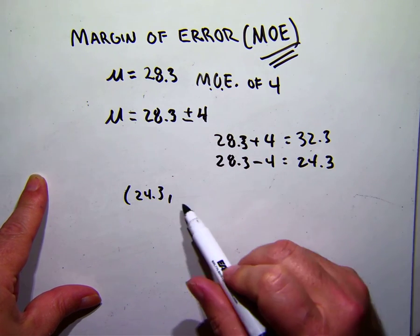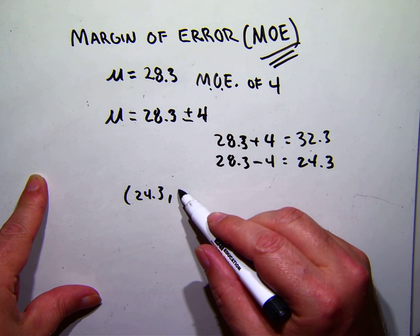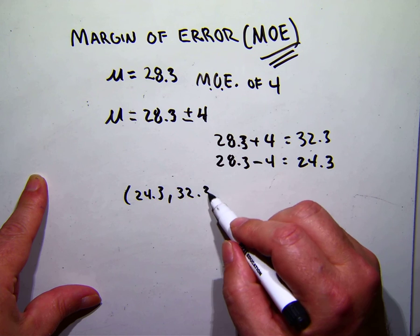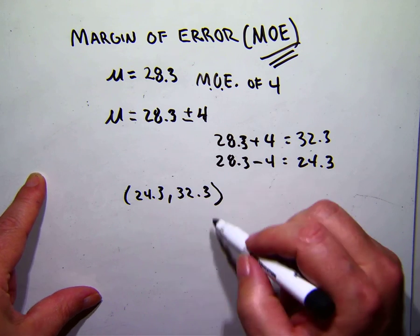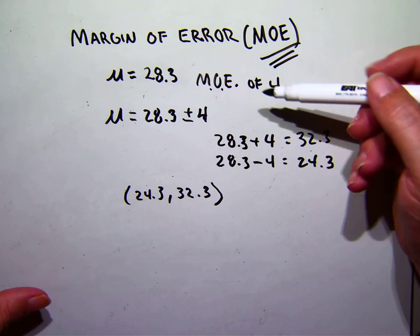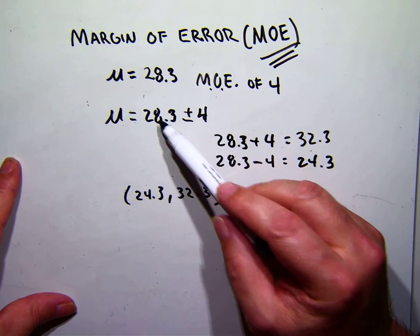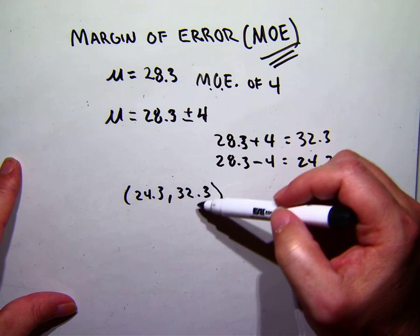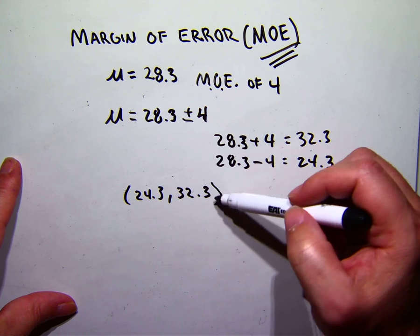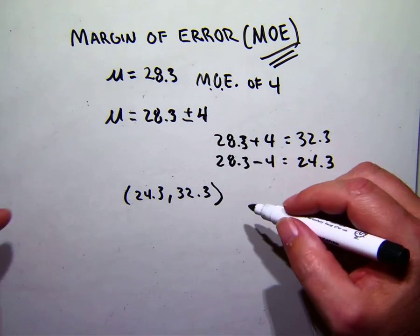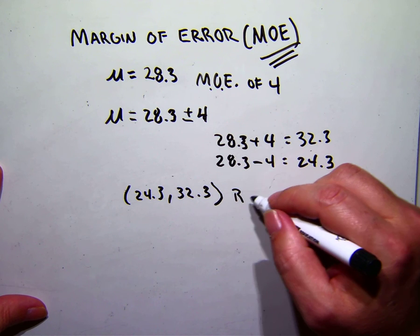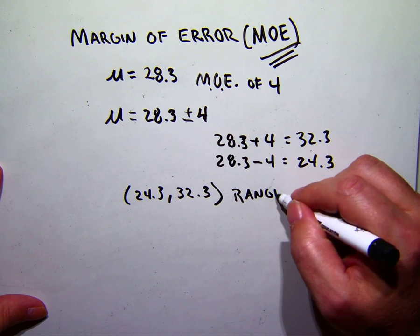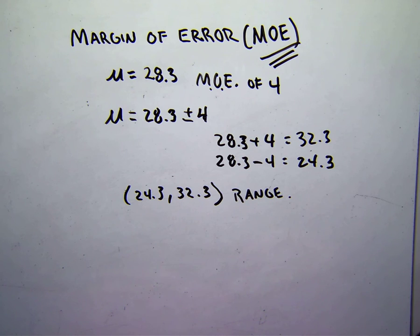So our range, at lowest the true mean could be, is 24.3 grams, and at the high end the largest weight could be 32.3 grams. So within that interval our true mean will lie. We're not sure if it's 28, but the lowest it could be is 24.3 and the highest it could be is 32.3. So that's our range of possibilities, and that pretty much covers the use of margin of error.